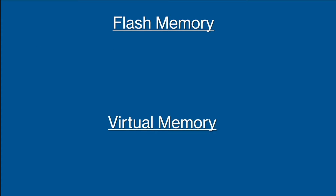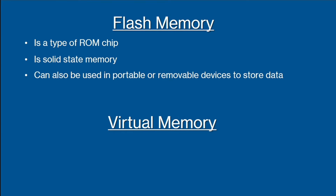Flash memory is a type of ROM chip and it's a good thing to be familiar with. It's solid-state memory that can be used in portable or removable devices to store data. Examples of where it's used include SD cards for phones as well as USB sticks, and the common characteristics are that it's non-volatile and has limited write cycles.